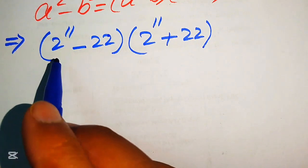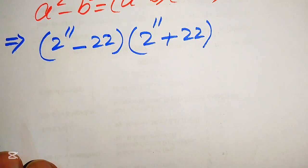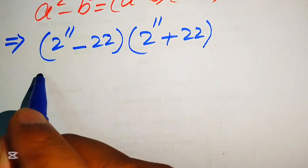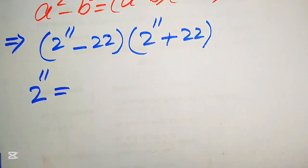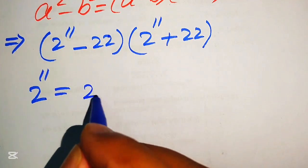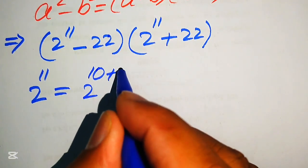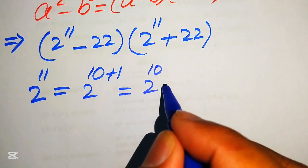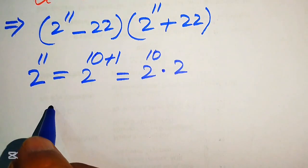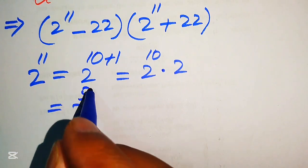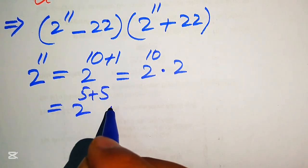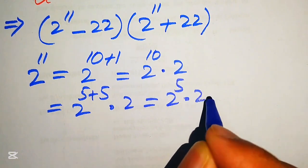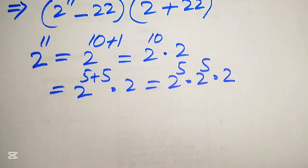Our next task is to find the value of 2 to the power of 11. We write 2 to the power of 11 as 2 to the power of 10 plus 1, which equals 2 to the power of 10 multiplied by 2. We then write 2 to the power of 10 as 2 to the power of 5 plus 5, multiplied by 2, giving us 2 to the power of 5, multiplied by 2 to the power of 5, multiplied by 2.